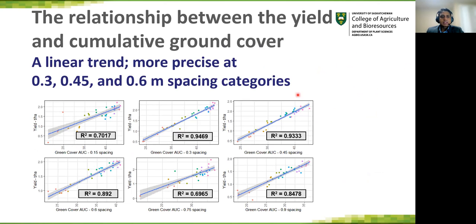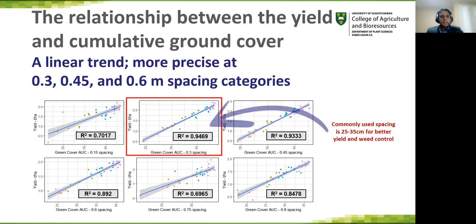Segregation of results by spacing category shows the relationship is robust at 0.3 meter spacing, 0.45 meter spacing, and 0.6 meter spacing. Here we were able to reach 94% R-squared for 0.45 meter spacing, 93% R-squared for 0.5 meter spacing, and 89% R-squared for 0.6 meter spacing. The most commonly used spacing is 25 to 35 centimeters for better yield and weed control, and the most stable predictions of the yield model are within this commonly used row spacing of 0.3 meters.